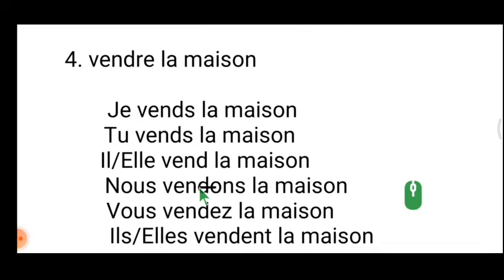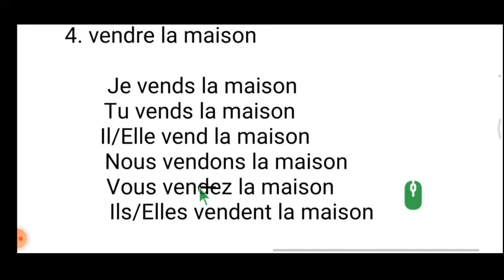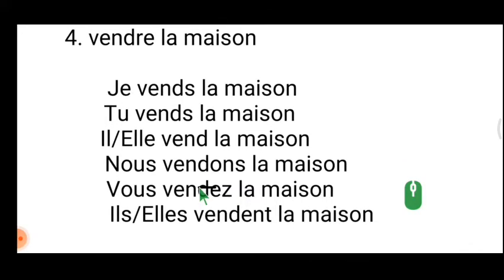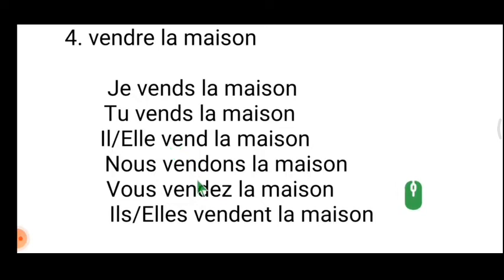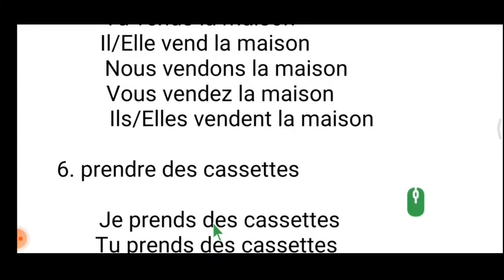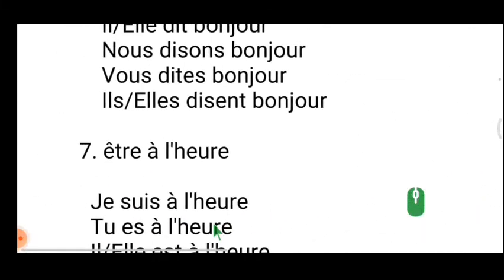'Vendre la maison' is an RE verb. The endings for RE verbs are: -s, -s, nothing, -ons, -ez, -ent. So: 'je vends, tu vends, il vend, nous vendons, vous vendez, ils/elles vendent la maison.' This is a normal RE verb. Let's go to the fifth verb.